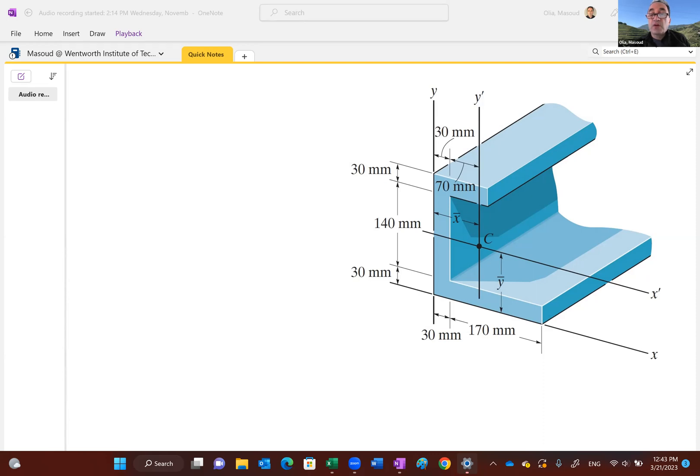So this time, actually, I have an unsymmetric cross-section. This is like a C, a channel-shaped beam that is not symmetric. And we want to find the moment of inertia with respect to x-prime axis. Now, x-prime axis is the axis that passes through the centroid of this shape. And the first thing we have to do is to find what is the location of x-prime relative to the x-axis, the base of this.